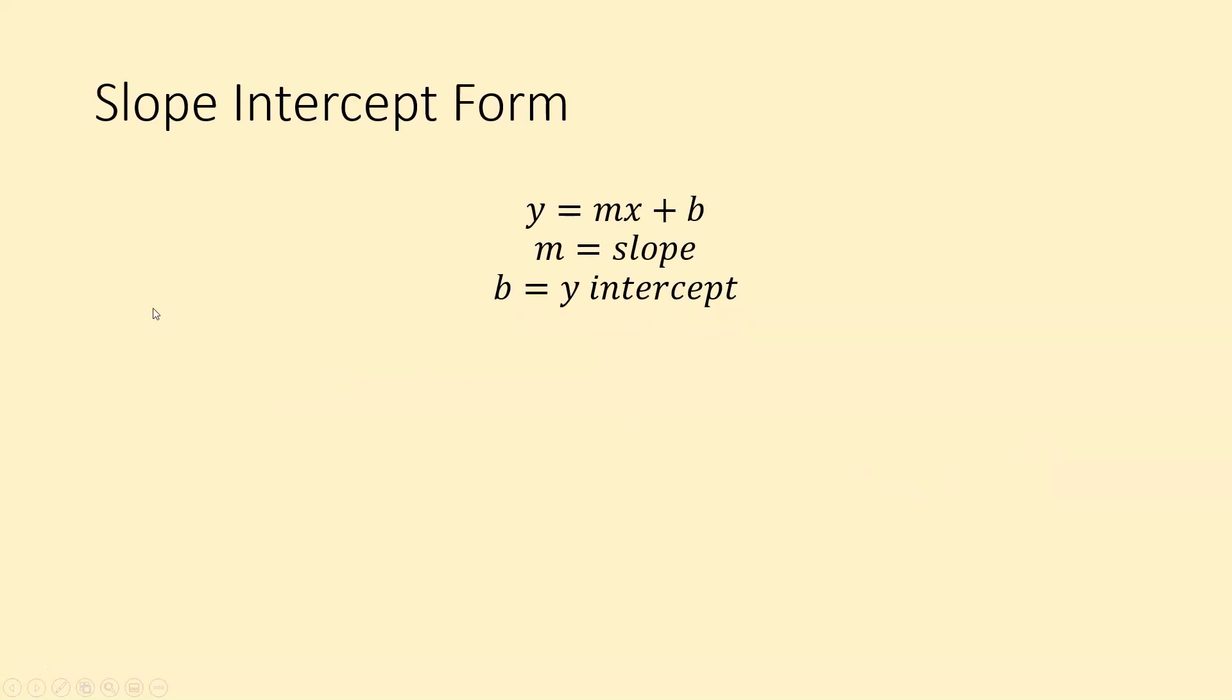So here's what I want you to write down in your notes. This is what slope-intercept form is. It's y equals mx plus b, where m is defined as the slope, and b is defined as the y-intercept.